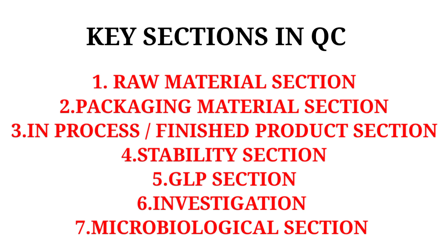The key sections in the quality control department include the raw material section, packaging material section, in-process or finished product section, stability section, GLP (Good Laboratory Practice) section, investigation section, and microbiological section.